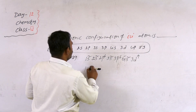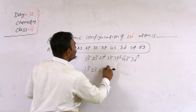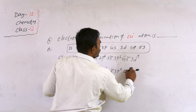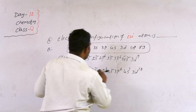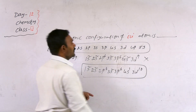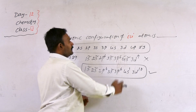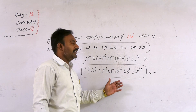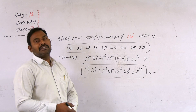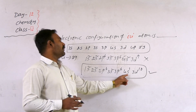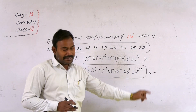But to gain extra stability, one electron jumps from the 4s orbital to the 3d orbital. The reason, as stated, is that half-filled and fully-filled orbitals are highly stable. So the correct electronic configuration of copper is 1s2, 2s2, 2p6, 3s2, 3p6, 4s1, 3d10. Thank you.